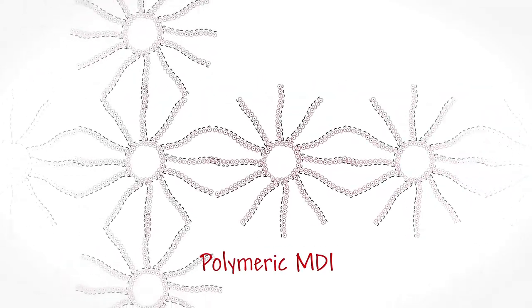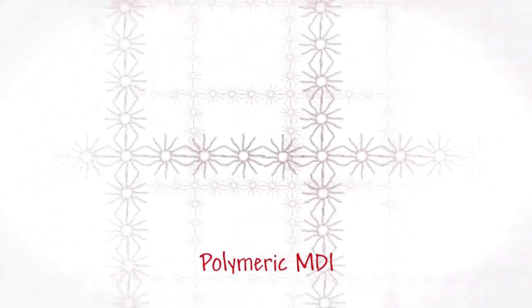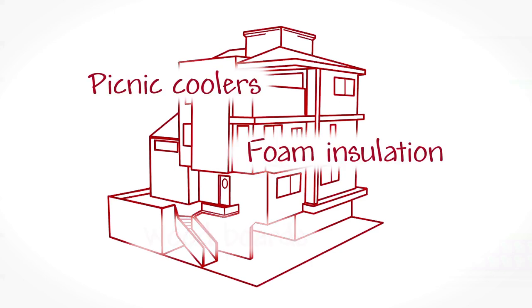Polymeric MDIs have many more places to plug into, which creates more of a structure. They're generally used to make, you guessed it, rigid products like picnic coolers, foam insulation and wood boards.